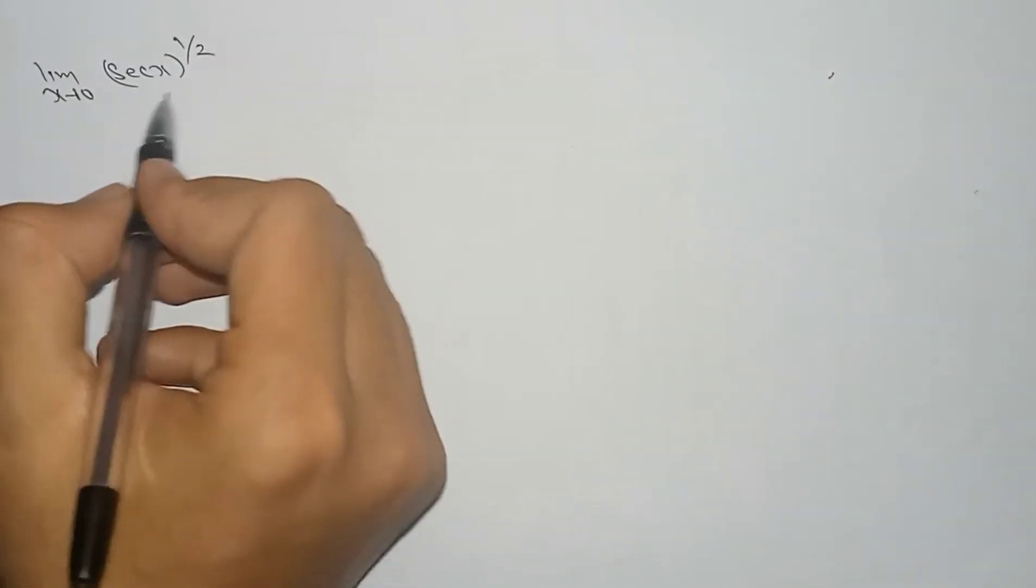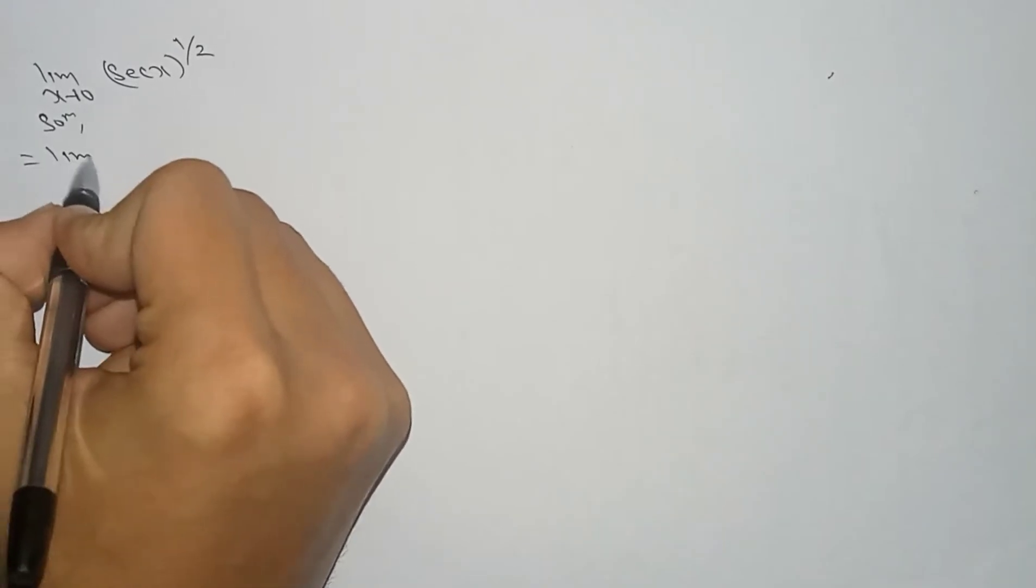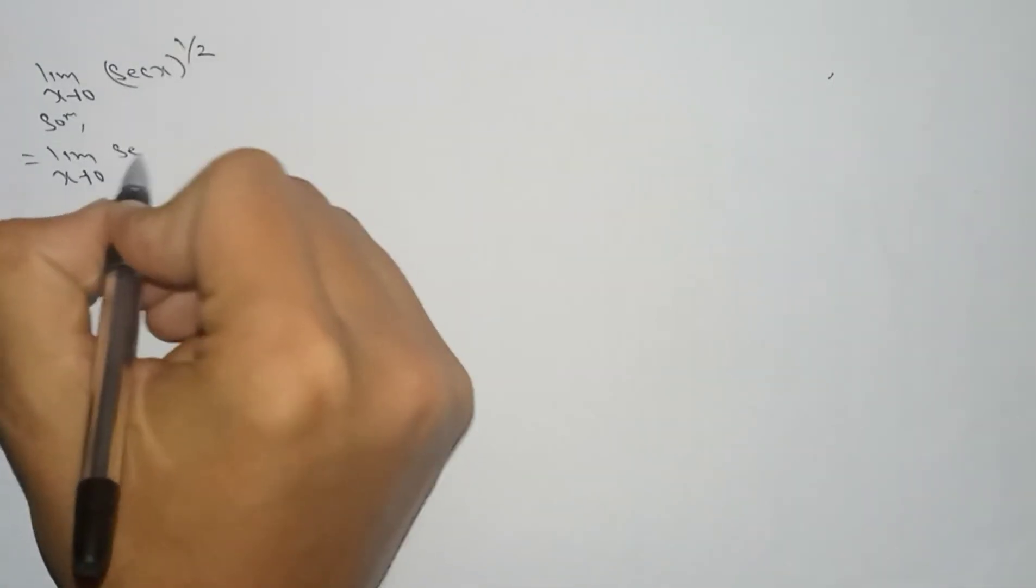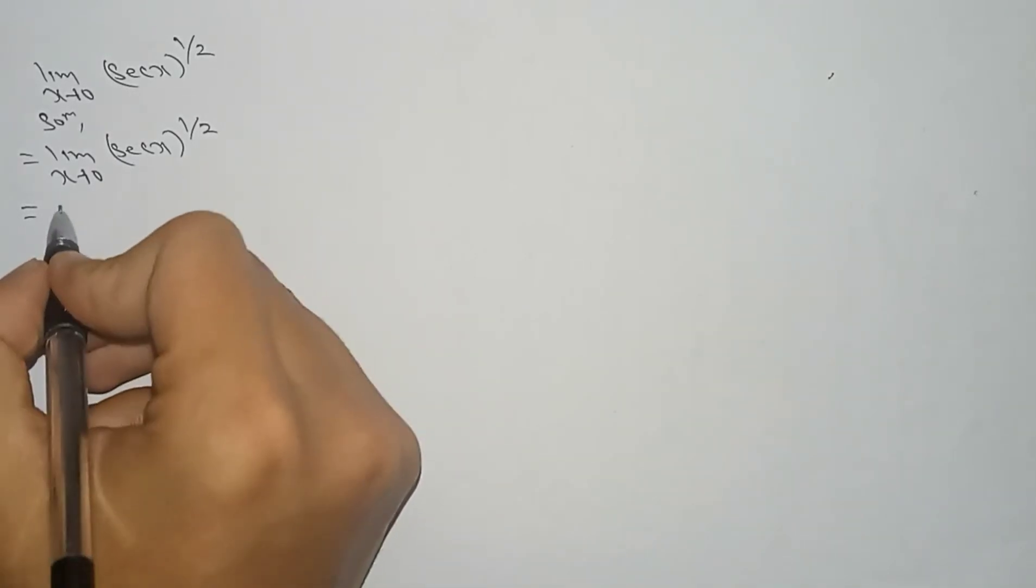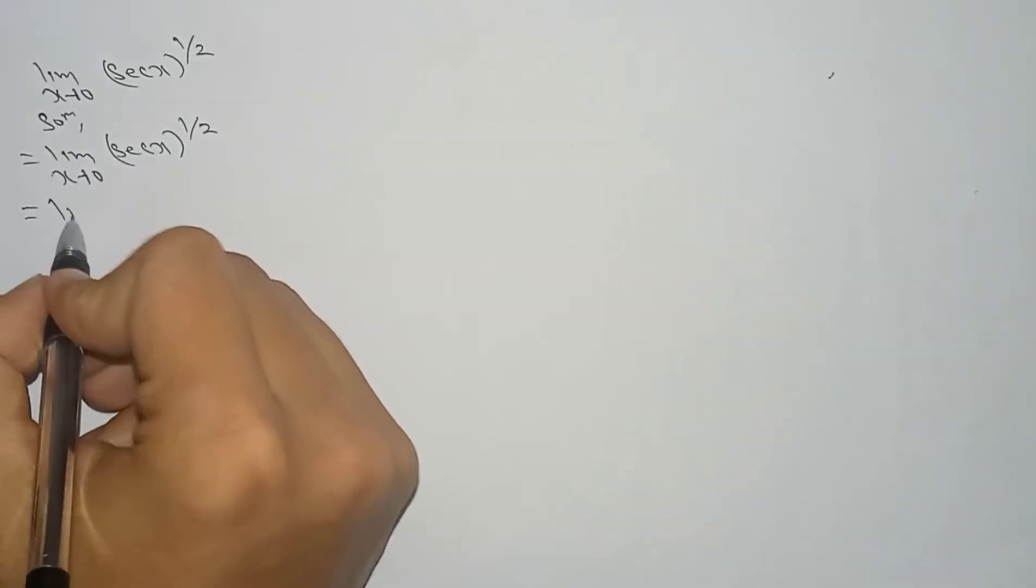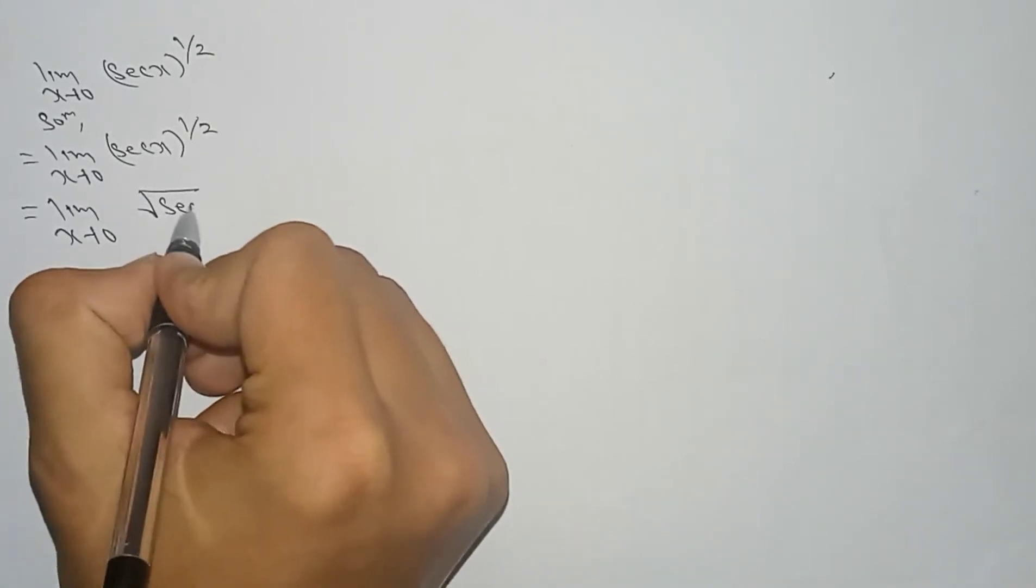Here is the question: limit x tends to 0, sec x power up 1 by 2. For this solution, it is equal to limit x tends to 0 sec x. This can be written as root under sec x.